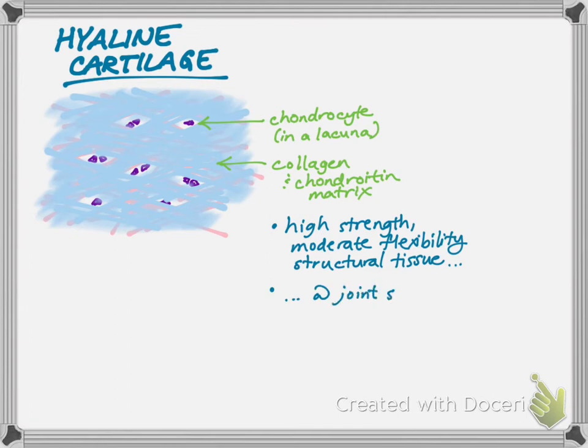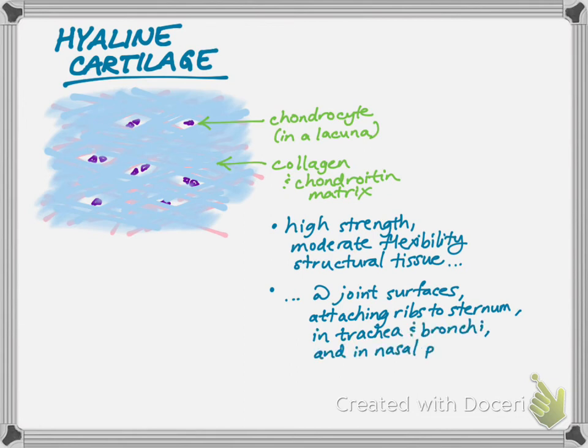This is the strong stuff, the strongest, least flexible of the cartilages. This is the stuff that's at your joint surfaces. When it gets worn down, that's what causes osteoarthritis. This is the stuff if you feel the plates in your nose, and this is what also attaches your ribs to your sternum or your breastbone.